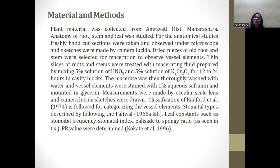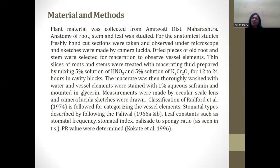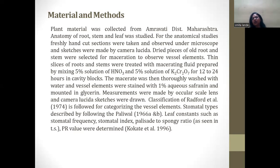This is the material and method used for the anatomy of this plant. The plant material was collected from Amaravati district, Maharashtra. Anatomy of roots, stem, and leaves was studied, but in this paper we have taken the anatomy of the leaf only. For anatomical studies, freehand cut sections were taken and observed under a microscope and sketches were made by camera lucida. For vessel categorization, the classification of Radford was used and stomatal type was described by Paliwal. Leaf constants — stomatal frequency, stomatal index, palisade to stomatal ratio, and palisade ratio value — were determined using the Coca-Tay method.